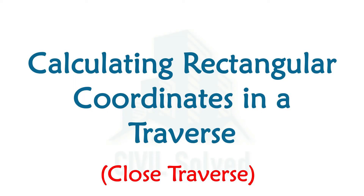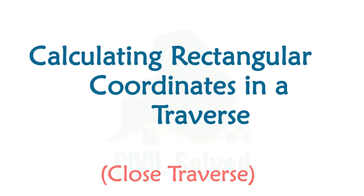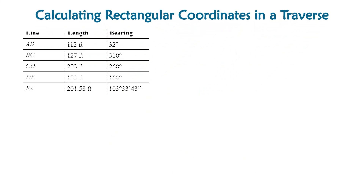Hello everyone. In this video I am going to teach you about the calculation of the rectangular coordinates in a traverse. The type of traverse is a closed traverse. For example, if we have been given different lines — five lines are being given, and the lengths and bearings are also given.